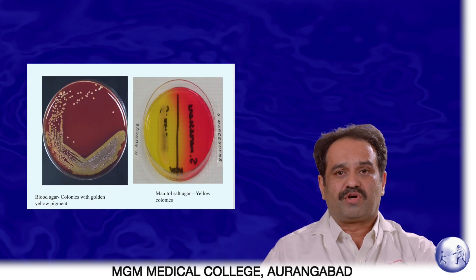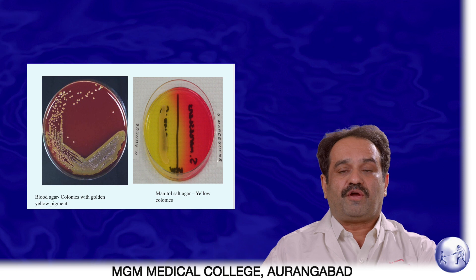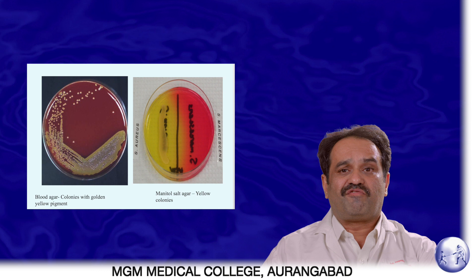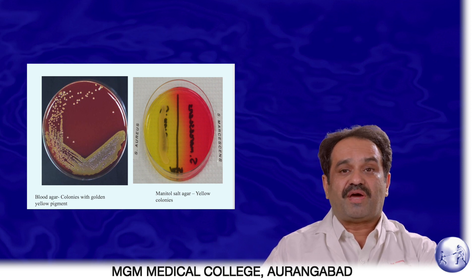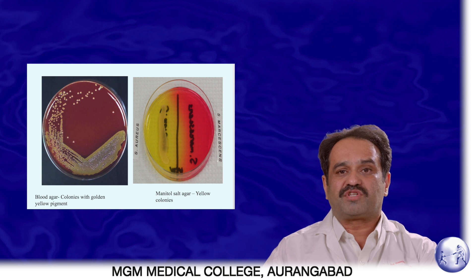There are two photographs. On the left is Staphylococcus aureus grown on a blood agar plate, showing small circular colonies with characteristic golden yellow pigment. On the right is a mannitol salt agar plate: on the left half, Staphylococcus aureus shows yellow mannitol-fermenting colonies, and on the right half, other Staphylococci show pink mannitol-non-fermenting colonies. Another blood agar plate shows characteristic beta-hemolytic colonies of Staphylococcus aureus.